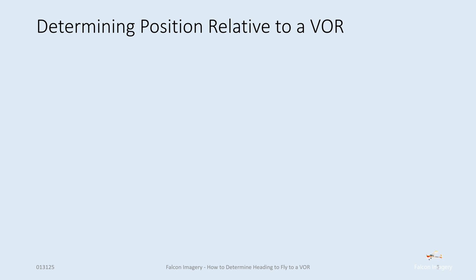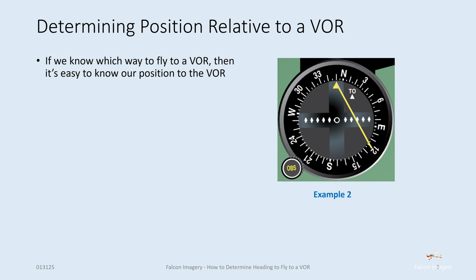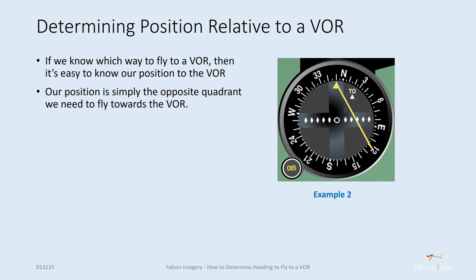The last part of this is determining your position relative to a VOR. Again, on the written instrument test, they'll show you a CDI situation or scenario and show you several airplanes and say which one represents the indication on the CDI. Using what we just learned, it's very easy to now know your position relative to the VOR. If we know which way to fly to a VOR, then it's easy to know our position — our position is simply the opposite quadrant from the direction we need to fly towards the VOR.